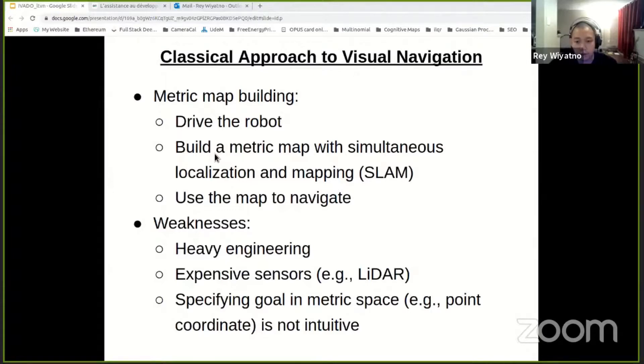However, this approach often requires heavy engineering and costly equipment such as LIDAR. And another limitation of the system is that specifying goal in metric space, such as point coordinates, is not intuitive. For example, if you want your robot to go to a particular location in your home, you don't want to input XY coordinates to your robot, right? It's not intuitive.